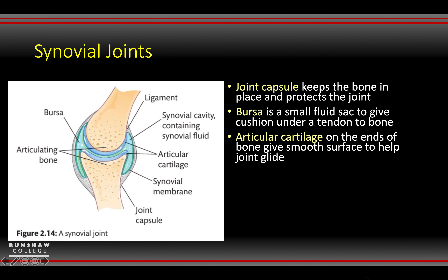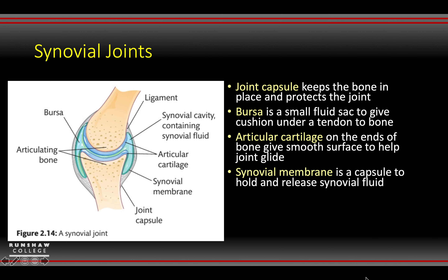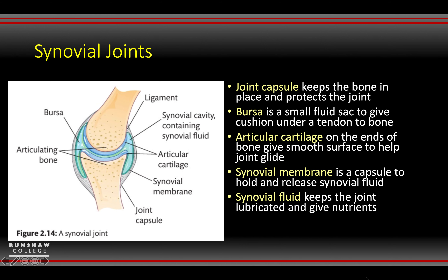Your articular cartilage is found at the end of both bones. Then we've got our synovial membrane, which is a capsule — membranes allow certain things in and out, but in this case it's there to hold and release synovial fluid when needed. This synovial fluid is there to lubricate the joint and allow nutrients to reach the bone.